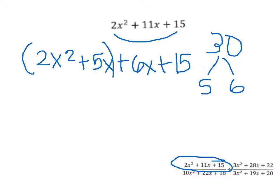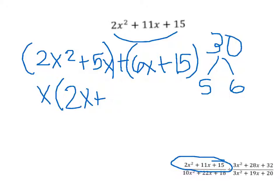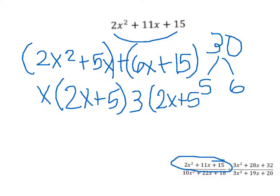Put parentheses to group the pairs. Then you factor out the greatest common factor out of each group. From the first group you get x times (2x + 5), and from the second group you can factor out a 3, giving you 3(2x + 5). Then you combine them together to get (x + 3)(2x + 5).